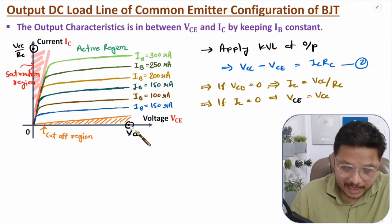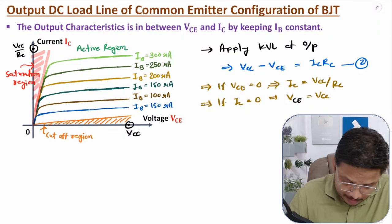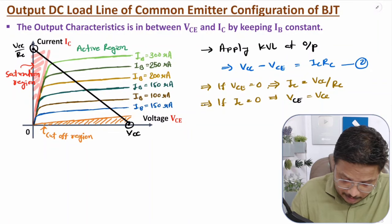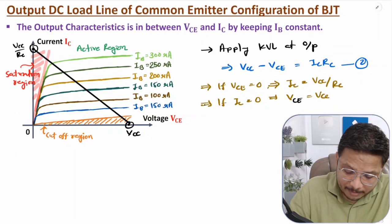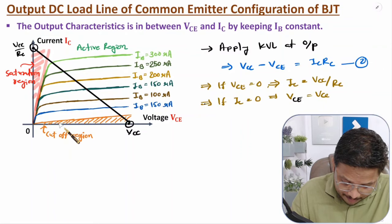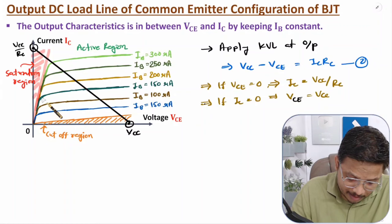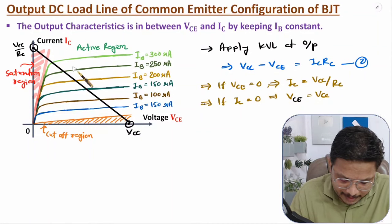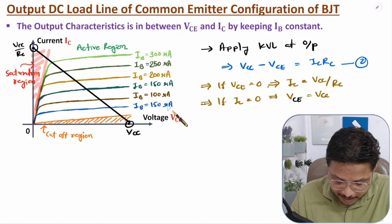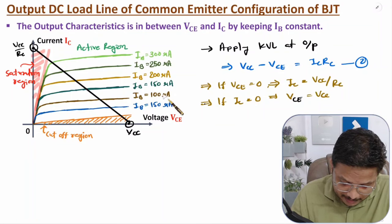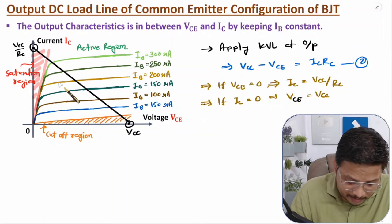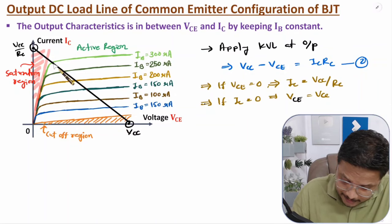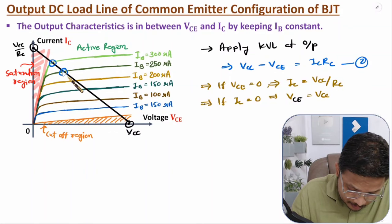By joining the two points — (VCE = 0, IC = VCC/RC) and (VCE = VCC, IC = 0) — we can draw the DC load line for the output. This DC load line intersects the output characteristic of the common emitter configuration at multiple points. These intersection points are the Q points at which the BJT can operate.